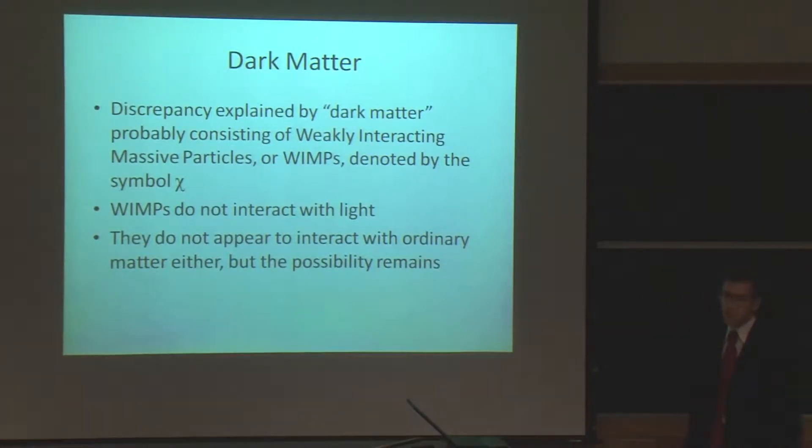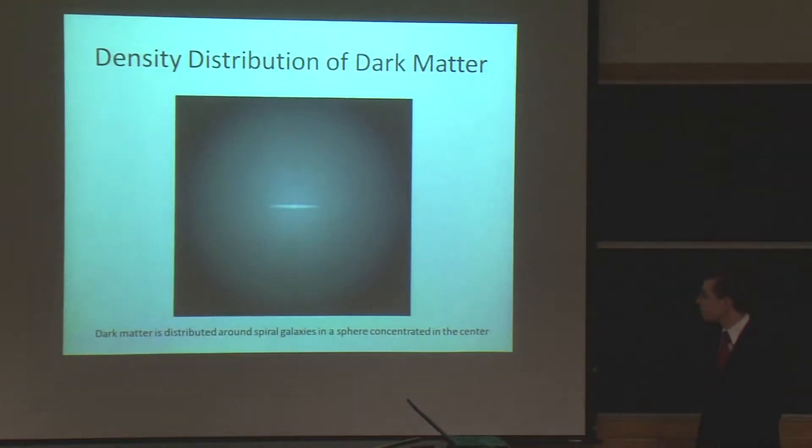As I said, WIMPs don't really interact with much. They don't interact with light, and they don't appear to interact with ordinary matter either. But we don't know that they can't, and that's where our research comes in. We do know that they're distributed in roughly a spherical shape. This white band is the Milky Way galaxy, and this cloud is what we call the dark matter halo. It's actually solid in the middle, a number of different models suggesting different densities.